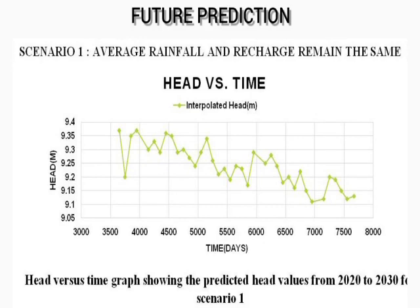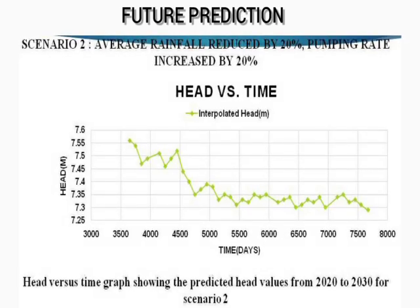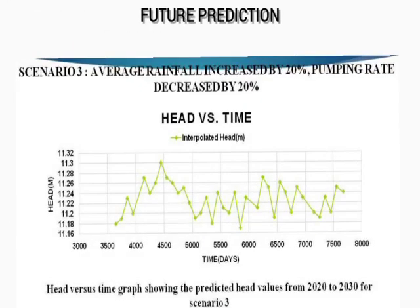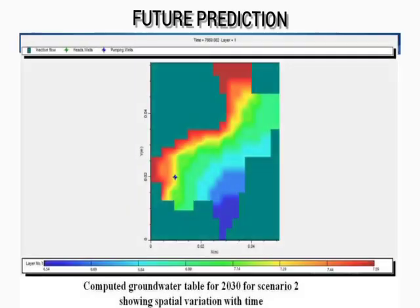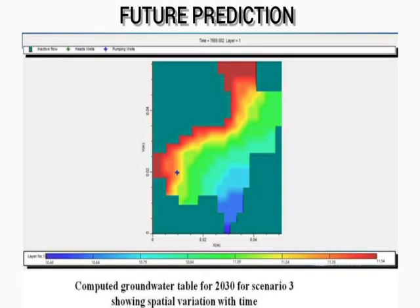After validation, three different scenarios were considered to predict the groundwater level variations for the study area during the period of 2020 to 2030. The head versus time graphs showing the results of these scenarios are given. Scenario 2 shows a drawdown of about 2 meters compared to scenario 1, which may be due to over-exploitation of groundwater from excessive pumping in the study area. In scenario 3, an increase in water table of about 2 meters from the average is observed. Spatial variation graphs for the different scenarios are also illustrated. The output model developed could be used for further groundwater modeling studies and to implement proper groundwater management strategies.